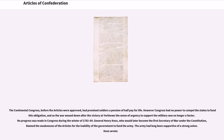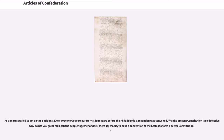The Continental Congress, before the Articles were approved, had promised soldiers a pension of half-pay for life. However, Congress had no power to compel the states to fund these obligations, and as the war wound down after the victory at Yorktown, the sense of urgency to support the military was no longer a factor. General Henry Knox, who would later become the first Secretary of War under the Constitution, blamed the weaknesses of the Articles for the inability of the government to fund the Army. Knox wrote to Governor Morris, four years before the Philadelphia Convention was convened: 'As the present Constitution is so defective, why do not you great men call the people together and tell them so, to have a convention of the states to form a better Constitution?'